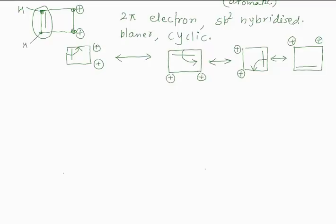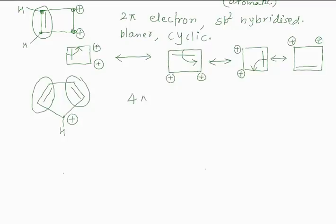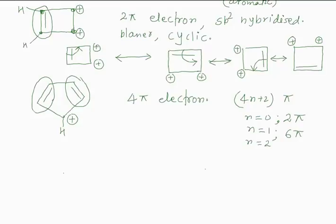Similarly, we can have a 5-membered ring system. This neutral compound is not aromatic because it has 2 plus 2 equals 4 pi electrons. The rule requires 4n+2 pi electrons: for n=0 that is 2, for n=1 that is 6, for n=2 that is 10. Since we have 4 pi electrons, this system is not aromatic.